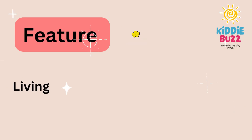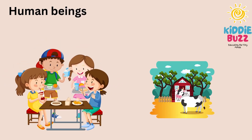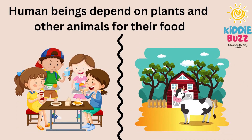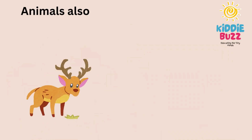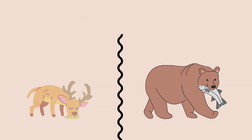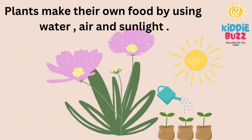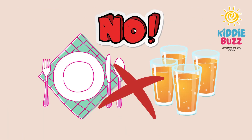Another feature is living things need food and water to stay alive. Human beings depend on plants and other animals for their food. Animals also depend on plants and other animals for their food. Plants can make their own food by using water and sunlight. On the other hand, just imagine the plate gobbles up your meal and the glass slurps off your juice — it sounds so funny because both are non-living things and they do not need any kind of food.